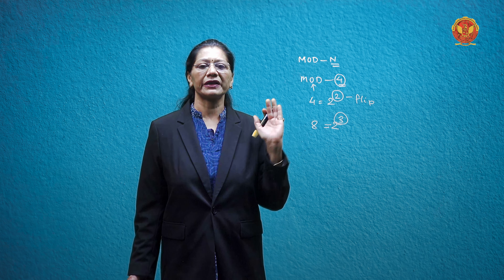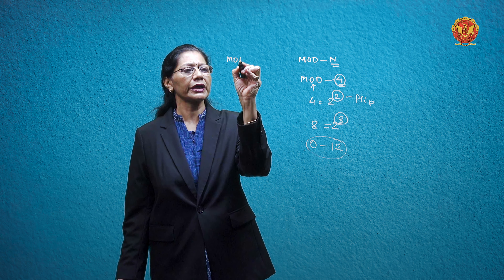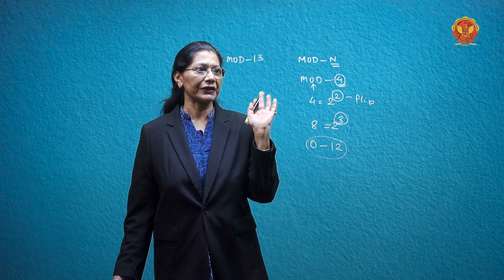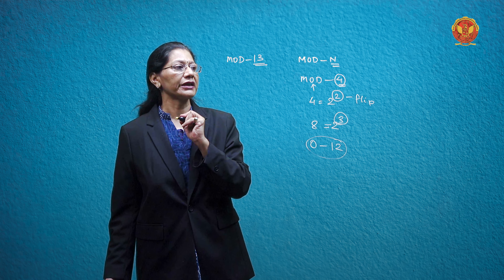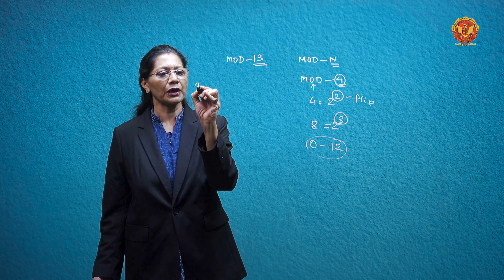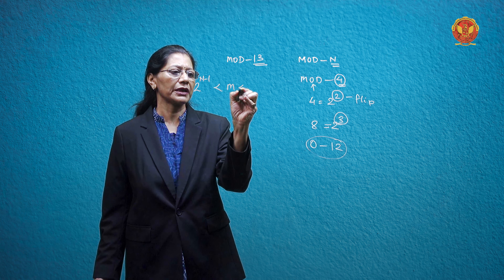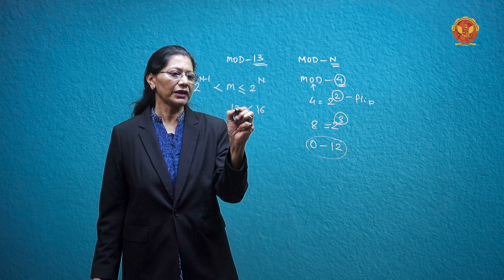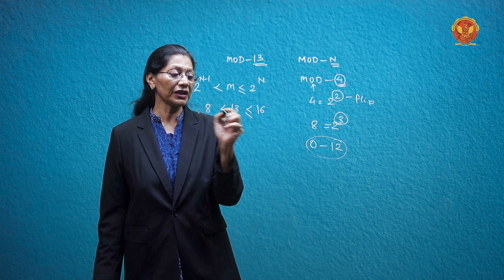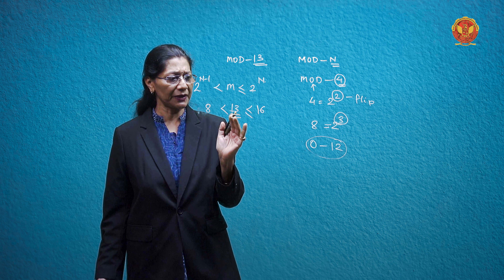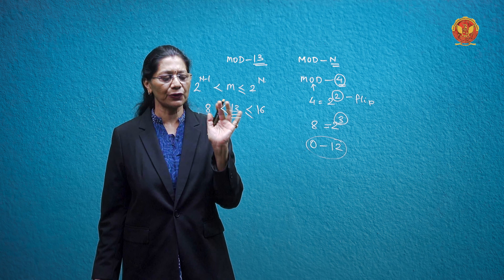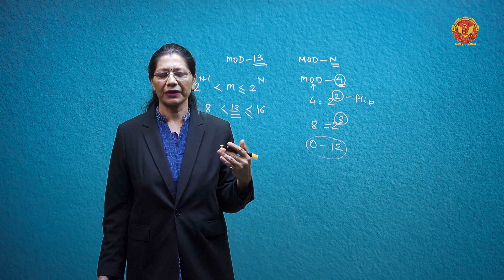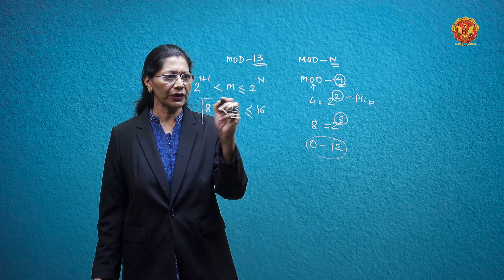In asynchronous counters there is an increasing or decreasing sequence — we cannot take any random state. But if you want to count from 0 to 12, we have 13 states, so it is asynchronous mode 13. To design 13 states, we apply the formula 2^(n-1) < m ≤ 2^n. Since 2^4 equals 16 and 2^3 equals 8, and 8 < 13 ≤ 16, we need 4 flip-flops. Out of 16 possible states we are using only 13. In this way we can design any mode — mode 7, mode 5 — using this formula to calculate the number of flip-flops required.